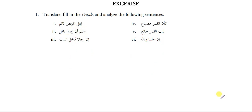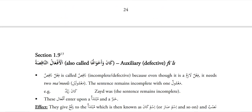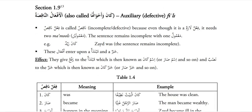Now let's go to the next topic. This was left from the last exercise. Section 1.9: Ka'na wa khwatuha, also known as af'alun naqisatu.